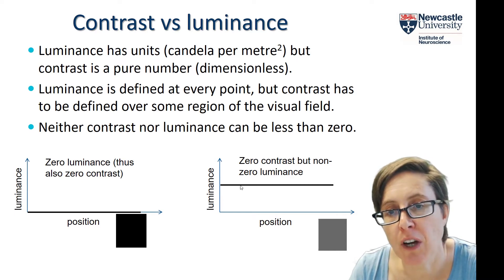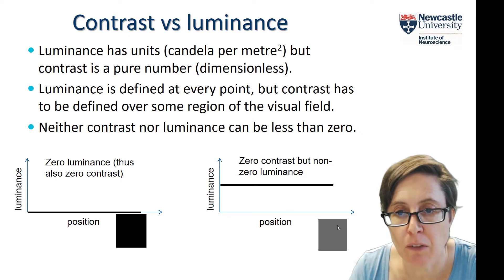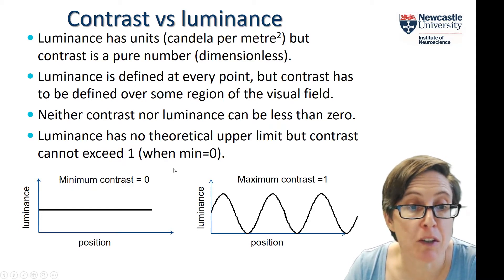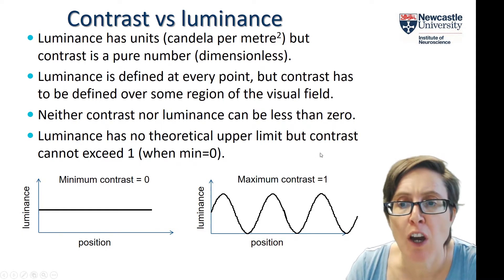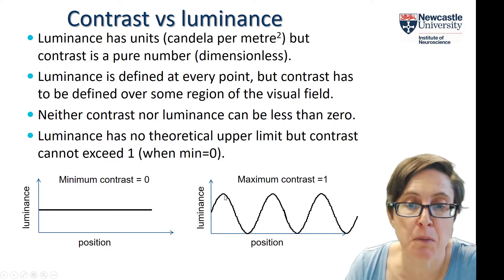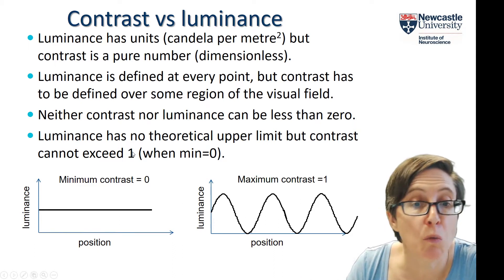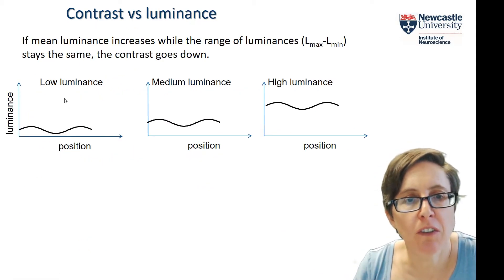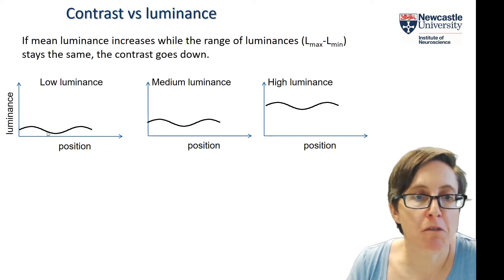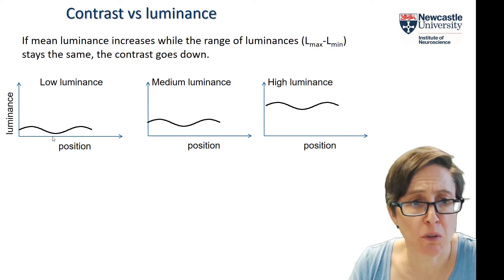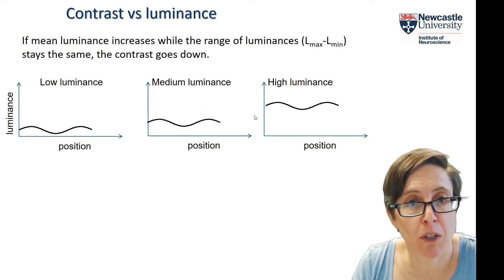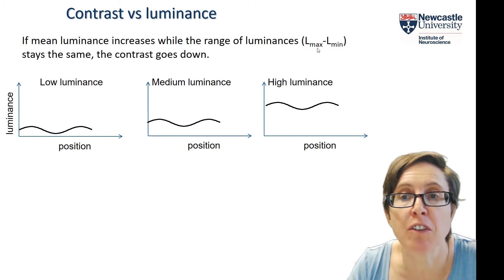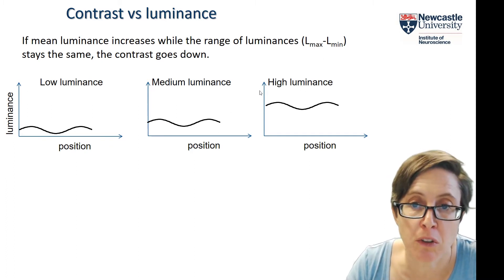For a uniform patch with non-zero luminance, you still have zero contrast because nothing's varying. Luminance has no theoretical upper limit — things could keep getting brighter without limit — but contrast has an upper limit of 1 or 100%, which occurs when the minimum is zero. If the range Lmax to Lmin stays the same but mean luminance increases, contrast actually goes down, because contrast is this difference divided by Lmax plus Lmin, which is getting greater.